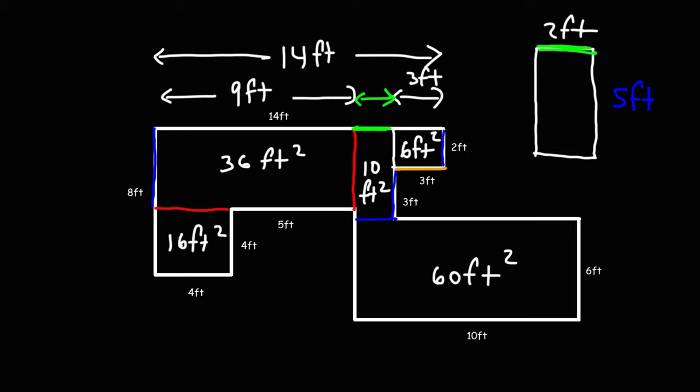Now, in order to calculate the total area of the composite figure, we need to add up the area of the individual rectangles that we've created. So let's start with 60 plus 10, and then 36, 16, and then the last one, which is 6. So add in 6 three times, that's going to be 18. So we're going to write the 8, carry over the 1. 1 plus 6 plus 1 is 8, plus 3, that's 11, plus 1 is 12. So the total area of this figure is 128 square feet.